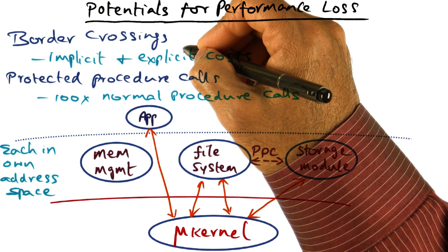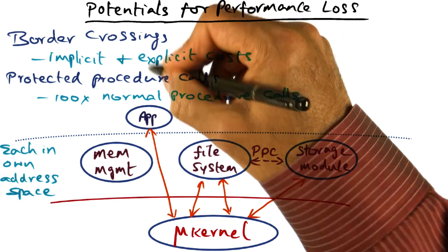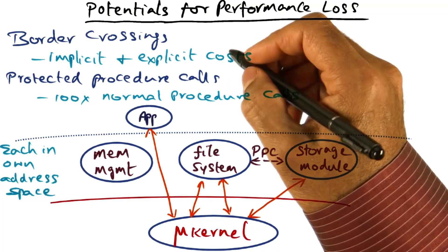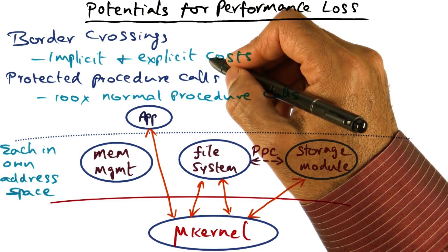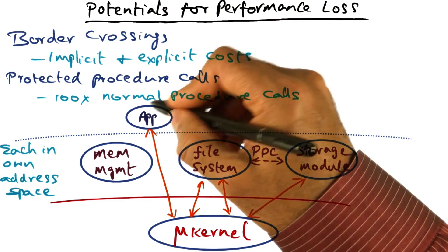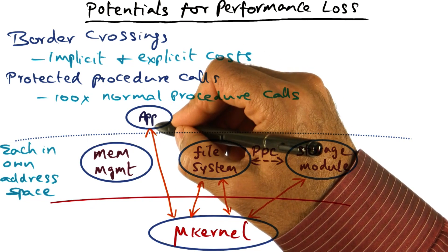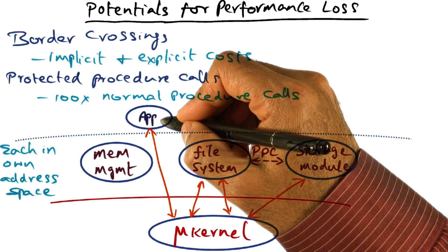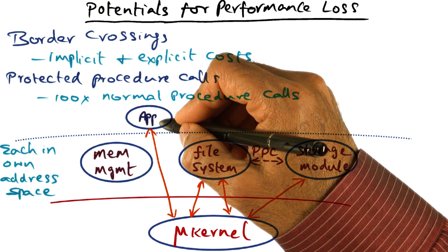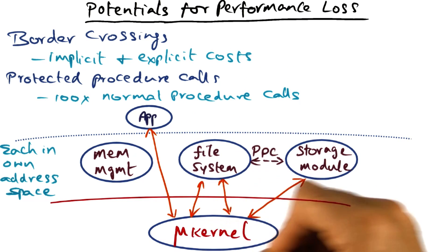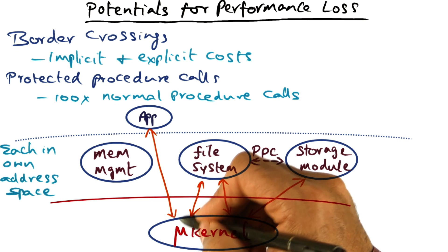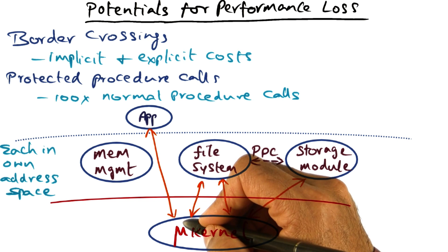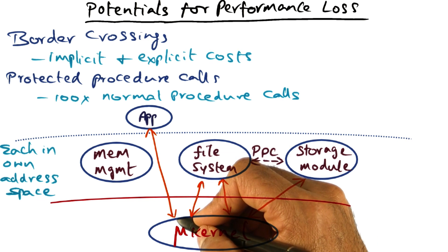Border crossings have both an explicit cost associated with it as well as an implicit cost associated with it. The explicit cost is the fact that from an application, which is at a particular protection level — namely the user level protection level of the processor architecture — you are slipping into the microkernel, which is at a different privilege level. That is the explicit cost in border crossing.